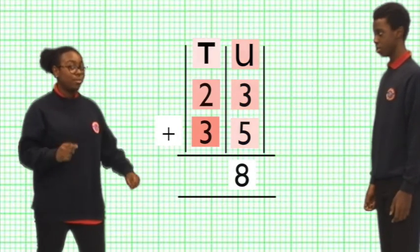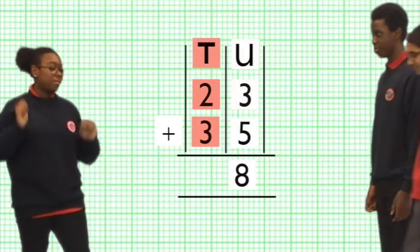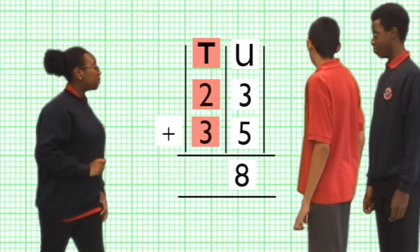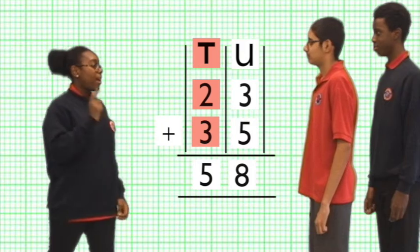Next up the tens column. Hey Saracen! Can you add up the tens column please? 3 add 2 equals 5. Correct! Yay!